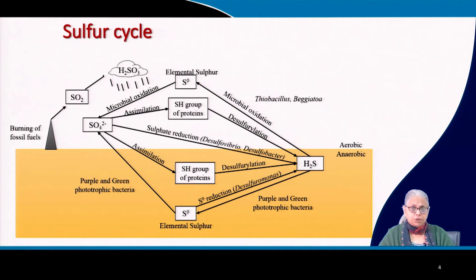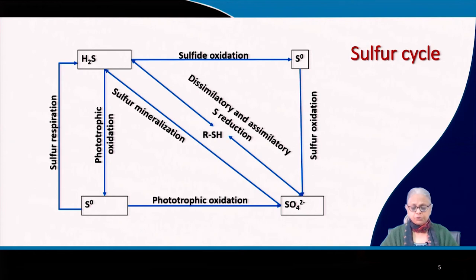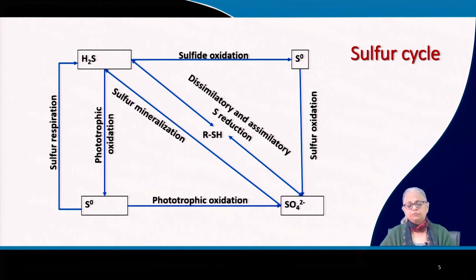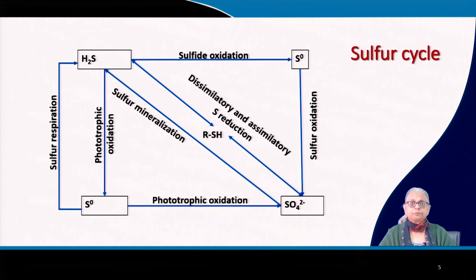Depending on how much oxygen there is in the water, you will get many of these reactions. Municipal wastewater is what I am talking about. In a nutshell, this is how sulfur is recycled through nature: H2S, elemental sulfur, sulfate, back to elemental sulfur, and then back to hydrogen sulfide. You have sulfur oxidation reactions, sulfur reduction, dissimilatory as well as assimilatory sulfur reactions, organic sulfur, phototrophic oxidation of elemental sulfur, and sulfur respiration. The number of processes present in nature that allow sulfur to be recycled, and the diversity of bacterial species involved, is enormous.